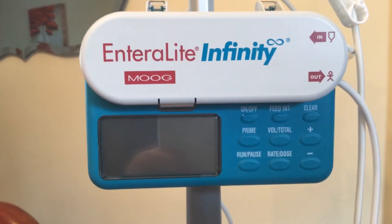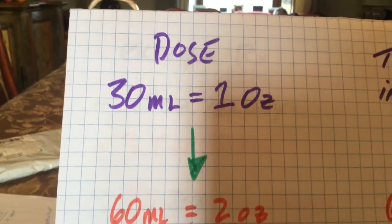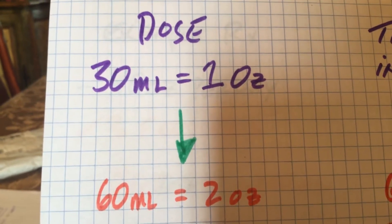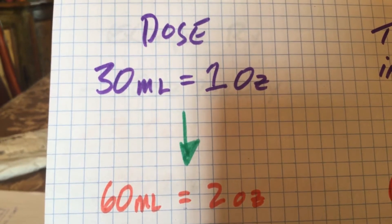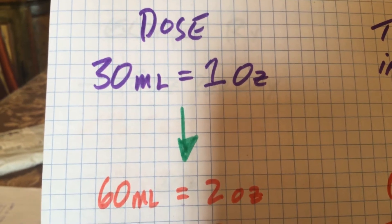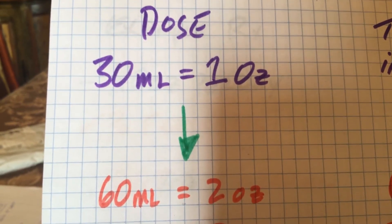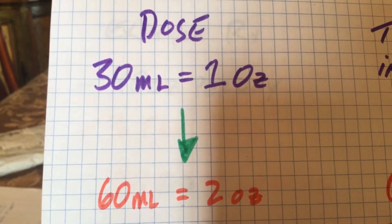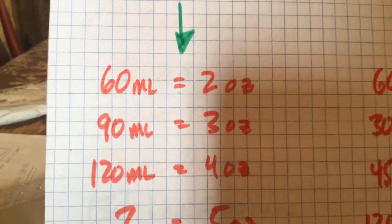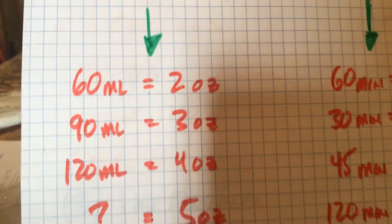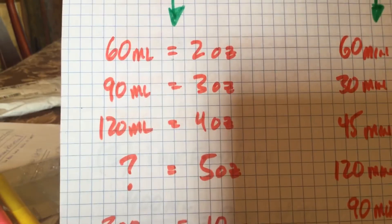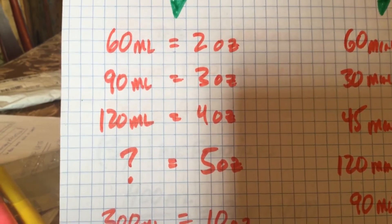So take a look over here at my calculations. The first thing you have to do is understand the units of measure that they use for the pump. Dosage is given in milliliters and the doctors usually write the prescription in ounces. So one ounce equals 30 milliliters. Therefore, 60 milliliters is 2 ounces, 90 milliliters is 3 ounces, 120 milliliters is 4 ounces.